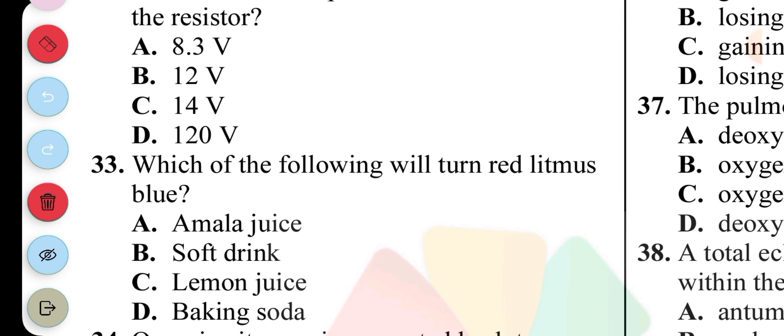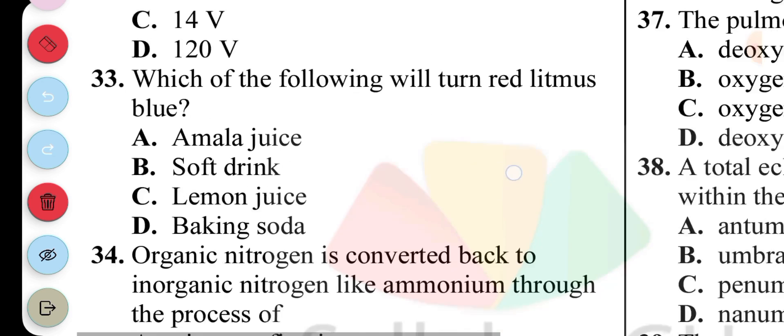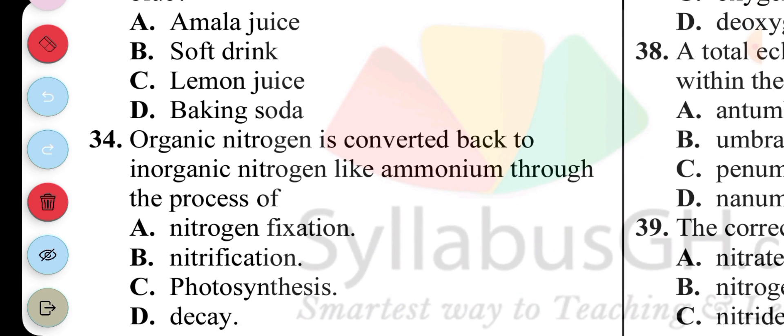Question 33: The following will turn red litmus paper blue: A. Amala juice, B. Salt drink, C. Lemon juice, D. Baking soda. The answer to question 33 is Baking soda. Why? Because bases turn red litmus blue. BRB - bases turn red litmus blue. Question 34: Organic nitrogen is converted back into inorganic nitrogen like ammonium through the process of A. Nitrogen fixation, B. Nitrification, C. Photosynthesis, D. Decay. So nitrogen becomes ammonium through decay.